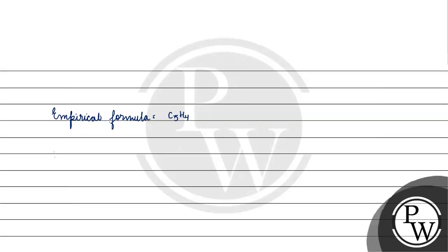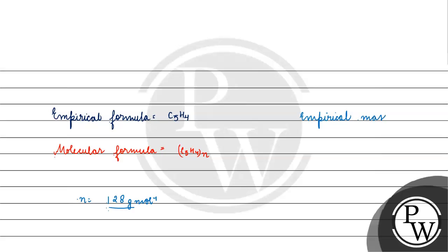Now we need the molecular formula, which is C5H4 raised to the power n. To find n, we divide the given molecular mass of 128 grams per mole by the empirical mass. The empirical mass is 12 times 5 plus 4 times 1, which equals 64 grams per mole. So n equals 128 divided by 64, which is 2.